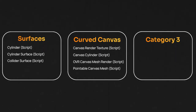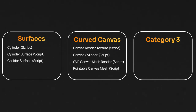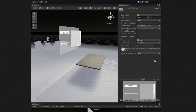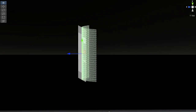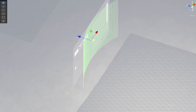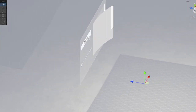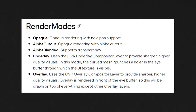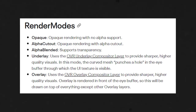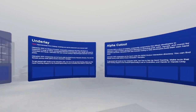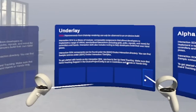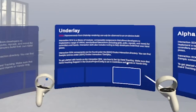The next category is curved canvas. These components help in converting a regular plain canvas into a curved one. The canvas render texture component renders a given canvas to a render texture. The canvas cylinder component takes the render texture and dynamically creates a mesh and resizes it to fit the Unity canvas. The canvas mesh renderer component then takes the render texture and the generated mesh and maps them to a mesh renderer — this component has several render modes like alpha blended, underlay, and alpha cutout, each with unique use cases. The pointable canvas mesh component remaps events on the curved surface to the events of the underlying canvas. So to sum it up, it takes a flat canvas, creates a curved canvas, and makes sure that the events are mapped together.